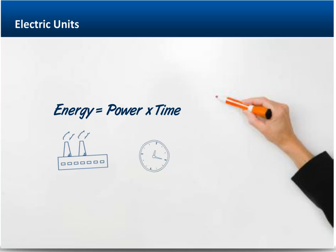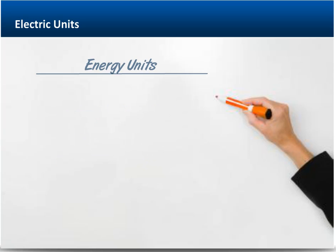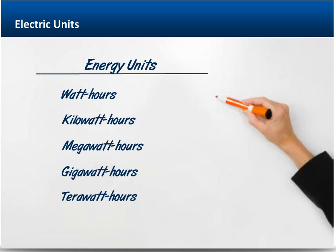Next, we'll discuss units of energy or usage. Energy or usage reflects demand or capacity multiplied by the amount of time that demand or capacity is in use. Energy and usage are measured in units of watt-hours, kilowatt-hours, megawatt-hours, gigawatt-hours, and terawatt-hours.